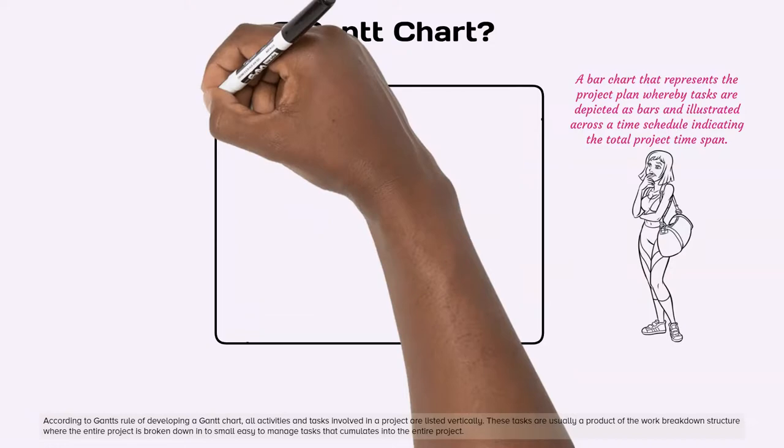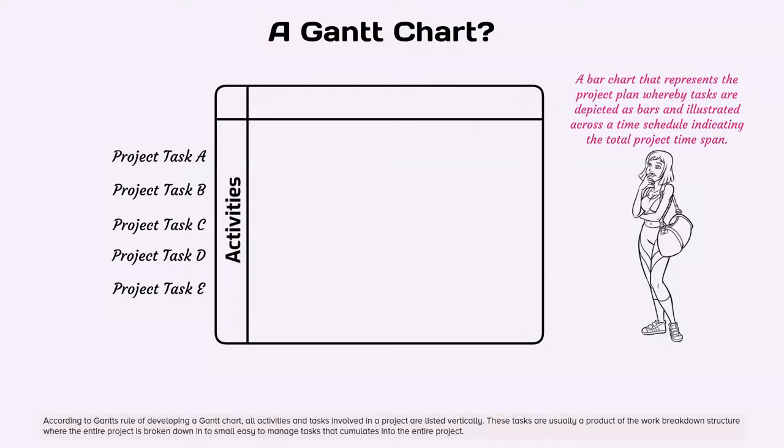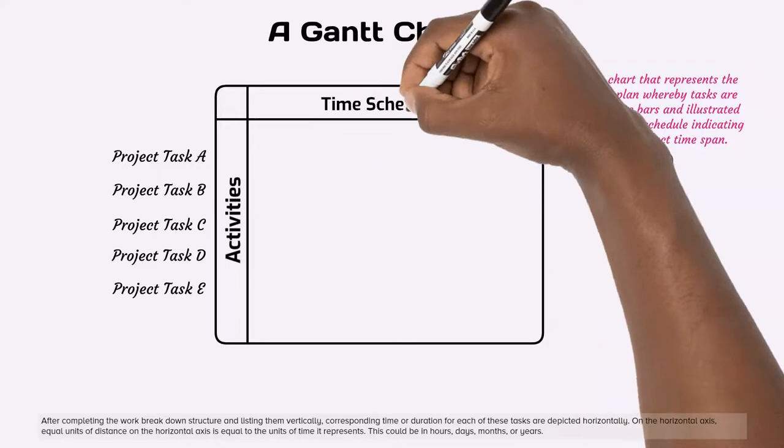According to Gantt's rule of developing a Gantt chart, all activities and tasks involved in a project are listed vertically. These tasks are usually a product of the work breakdown structure where the entire project is broken down into small easy-to-manage tasks that cumulate into the entire project. After completing the work breakdown structure and listing them vertically, corresponding time or duration for each of these tasks are depicted horizontally.